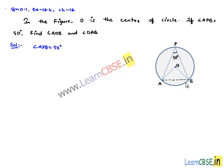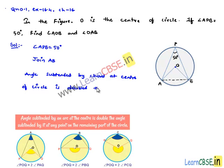Now, we know that join AB, then AB will be the chord of the circle. We know that angle subtended by chord at center of circle is double the angle subtended by it at the point on the circle.